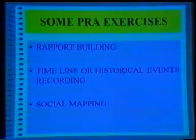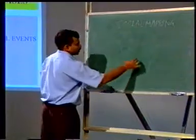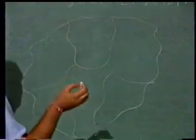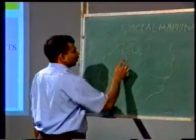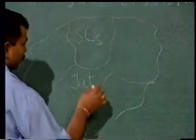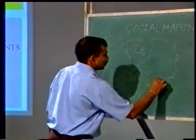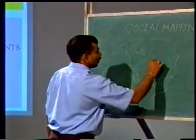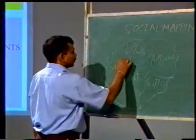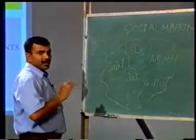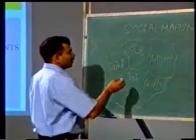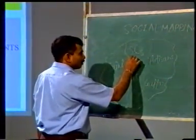The next exercise is social mapping. In social mapping, we try to map the different communities residing in different parts of the village. Taking a Punjab village as an example, there may be an SC community in one part, a Gujar community in the central part, and some artisan communities elsewhere. These exercises are done in local languages, and we try to find out which communities are living in the village and approximately how many households each community has.